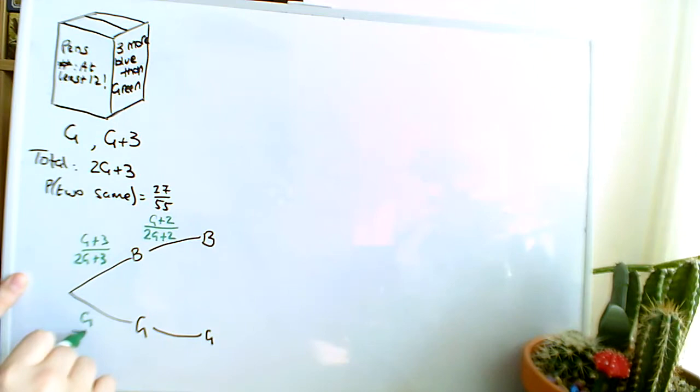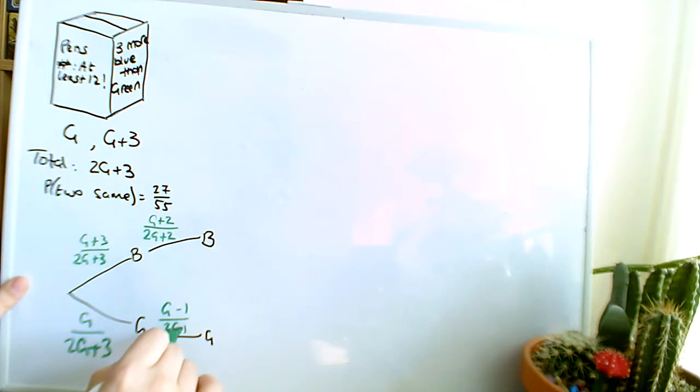On the converse side, the probability of getting green the first time is G over 2G plus 3, and if I get another one, I've lost the green, so that's G minus 1 over 2G plus 2.